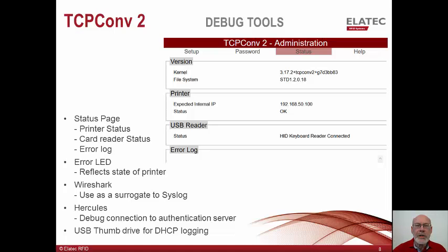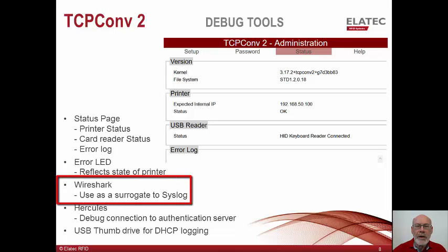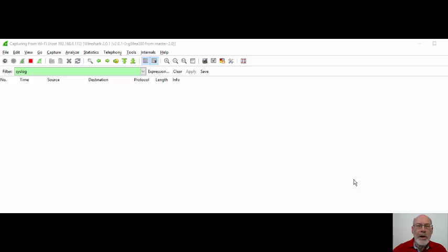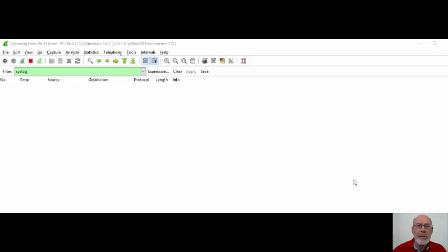The converter monitors the state of the USB card reader once every 10 seconds. If the reader is not detected, the converter status page will show USB disconnected. Once the reader is connected, it will show the type of device connected and whether it uses HID or CDC protocol. This status can also be reported via syslog. Syslog can be used for short-term debug even if the site does not host a syslog server. For example, I have a TCP converter configured to send syslog traffic to my PC. If I open Wireshark and configure it to monitor traffic from the converter and to only show syslog, we can use my PC as a debug tool. Let me first show how Wireshark can be used to emulate a syslog server and show the state of the connected USB reader.